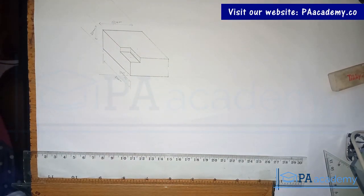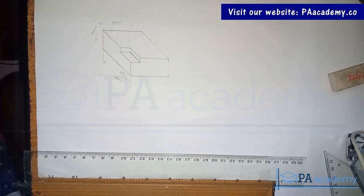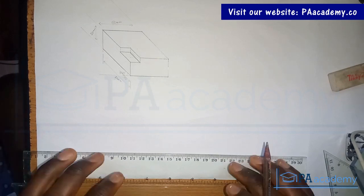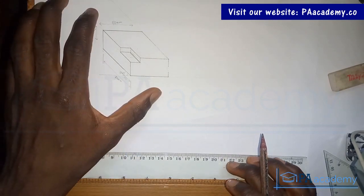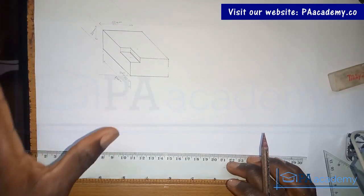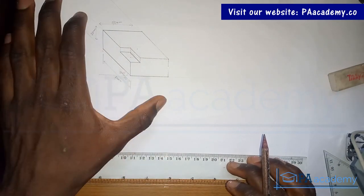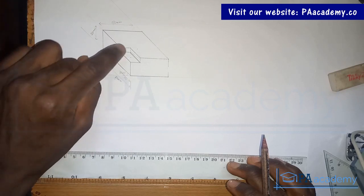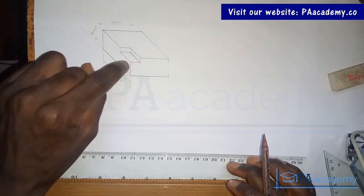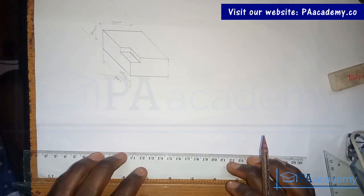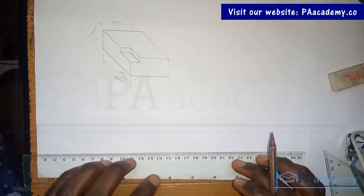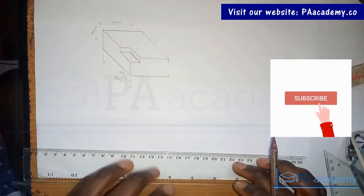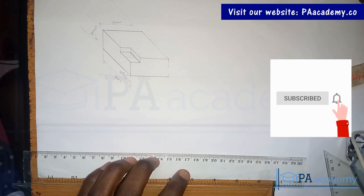Hi, hello everyone, welcome back to PA Academy. This is the second drawing we'll be looking at under oblique drawing. If you missed the first part, the link to that video is in the description. This is what we are going to be drawing - a rectangular box with a recessed section. If you are new to this channel, please consider clicking that subscribe button.